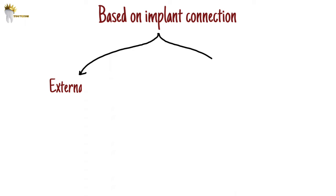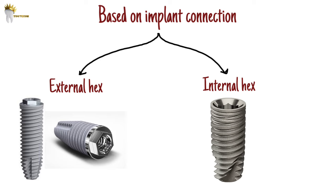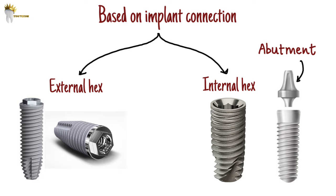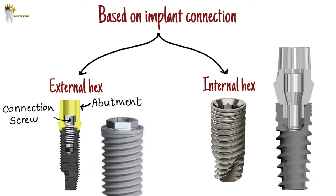On the basis of implant connection — meaning the connection of the implant with the abutment and healing screw — implants are classified as those with external connection (external hex) or internal connection (internal hex). External hex means the connection emerges above the implant platform; all components like the abutment and healing screw get engaged over and around this connection and are fixed using a connection screw. In internal hex, the connection remains inside the implant body, and all components go into the implant connection and are fixed using the connection screw.